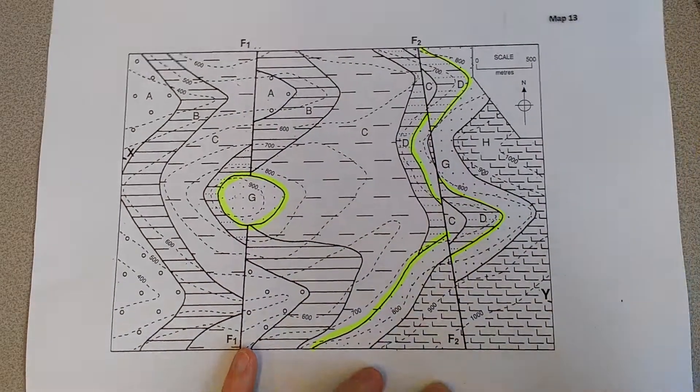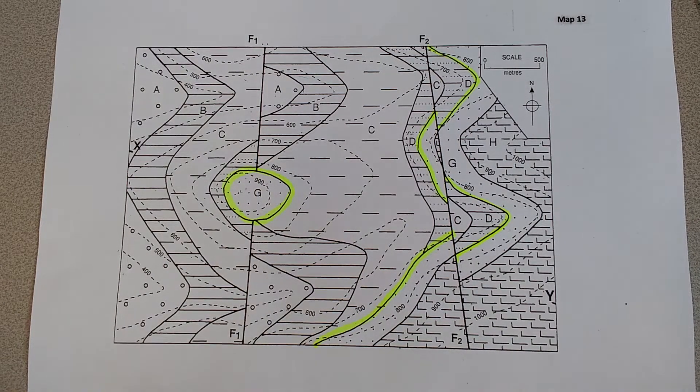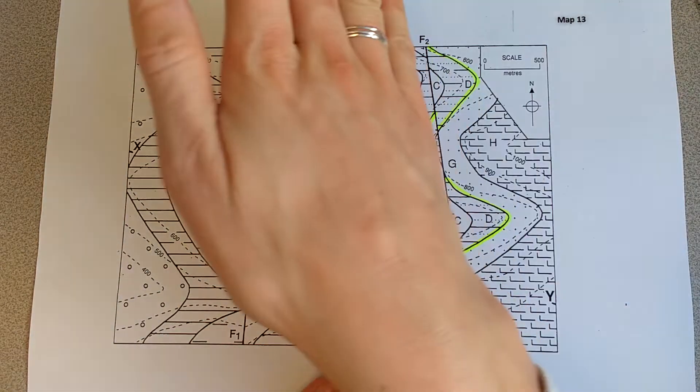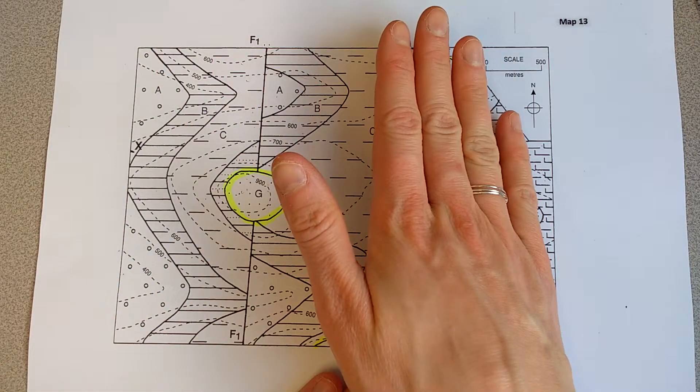So we've now identified our unconformity, and if we look at the V's as I just showed you, you can see that these are all dipping again down to the east. So the unconformity is...